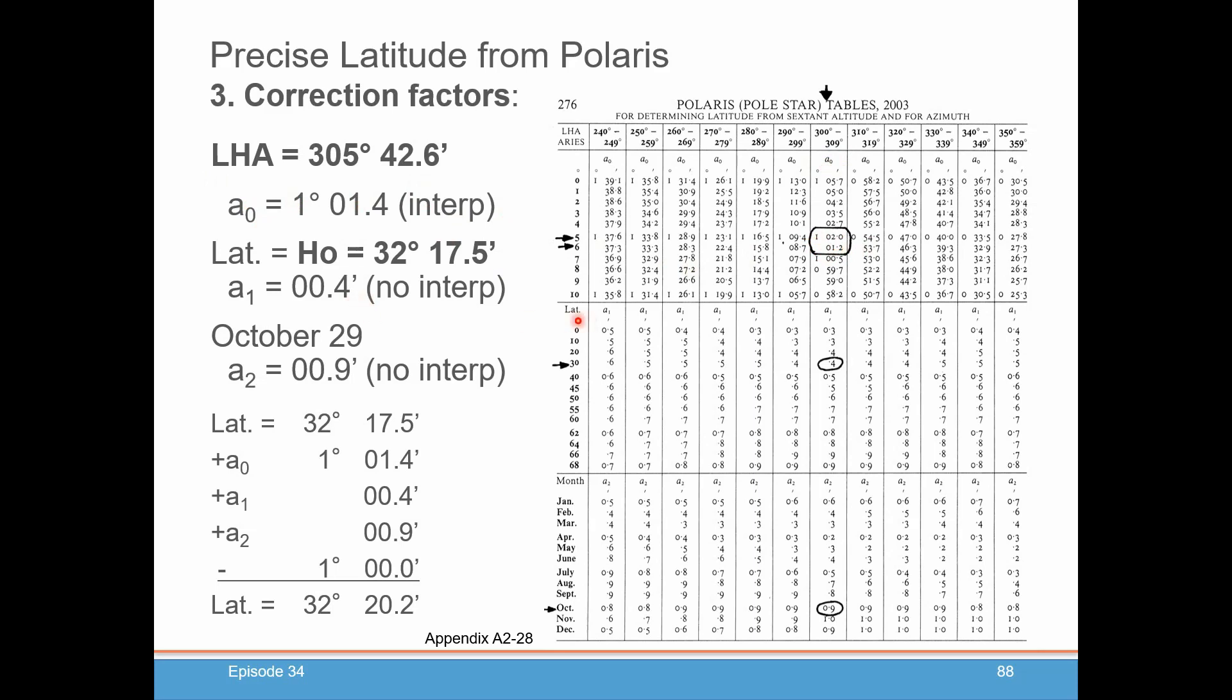Then the next thing you do is you look for your latitude. Again, there's no interpolation here. Just look for the latitude that's closest to where you are. So we're at 32 degrees, so our closest latitude in this table is 30 degrees. Go over to our column. Again, you just want to stay in this column. And we get a number for A1. That's 0.4, so you record that.